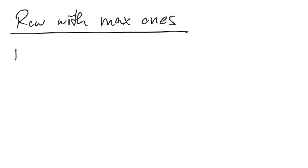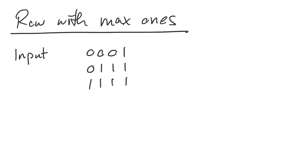For example, as input we might have a matrix: 0, 0, 0, 1, 0, 1, 1, 0 — then 1, 1, 1, 1 — and 0, 0, 1, 1. The answer would be this row, which is row number two, assuming zero indexing.